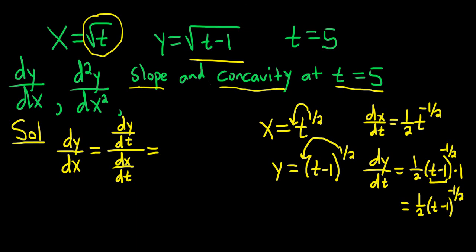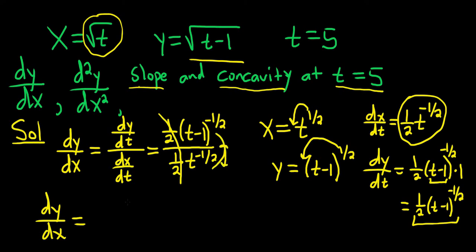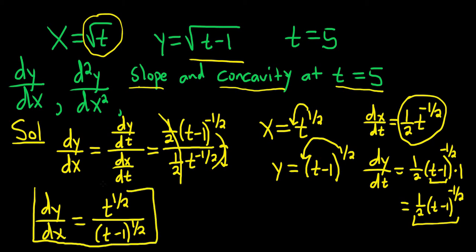So dy/dt is one-half times (t minus 1) to the negative one-half — that's the top piece — over dx/dt, which is one-half times t to the negative one-half. This is really nice because the one-halves cancel. So dy/dx equals t to the one-half over (t minus 1) to the one-half. You can rewrite it as the square root of t over the square root of (t minus 1). That would be a prettier answer.